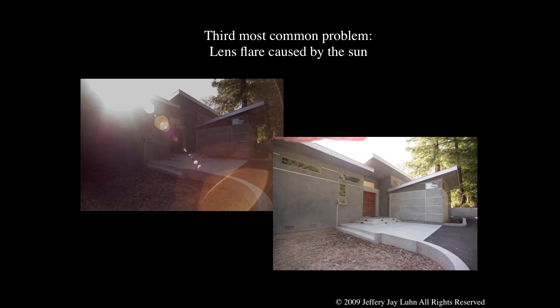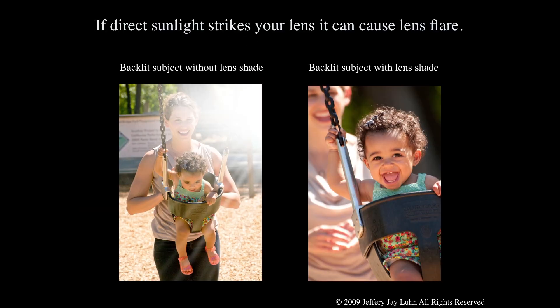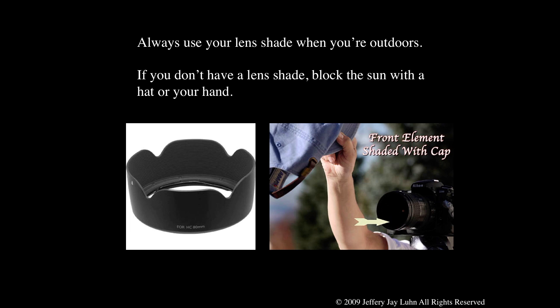Now we're going to do some other exposure adjustments. If it's sunny outside, we're going to do the lens flare correction. You'll see there's a lens flare in the upper left — I've put my hand in the lower right photograph to block that. When direct light strikes your lens it causes a lens flare. The one on the left has no lens shade, so there's a bad lens flare. But when I move in, get rid of the background, and use my lens shade, suddenly I'm getting an improved image. That's what a lens shade looks like — if you don't have one, you can use your hand, a hat, or whatever to cast a shadow on your lens.